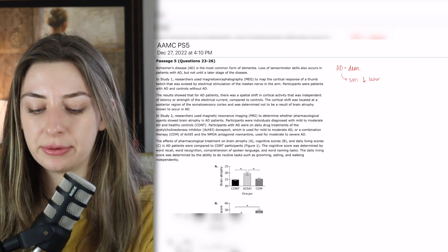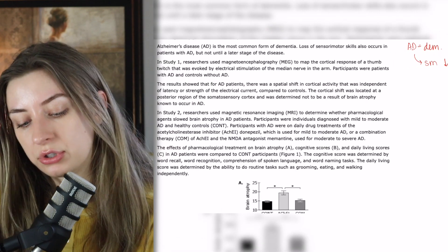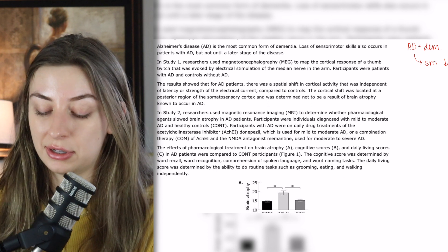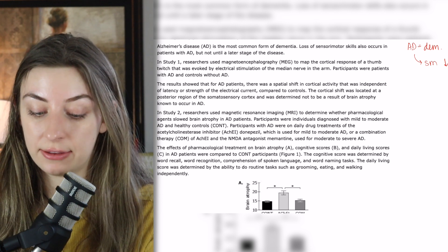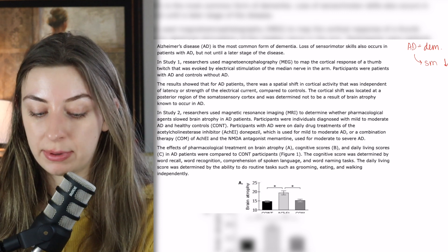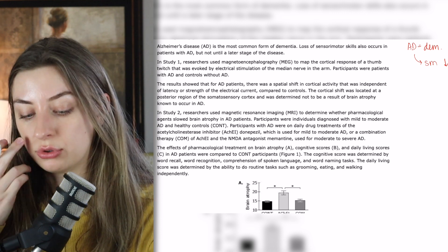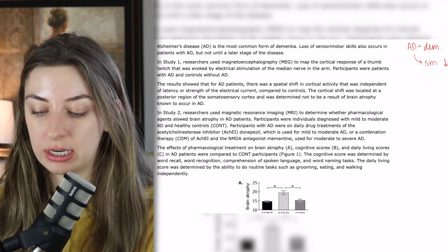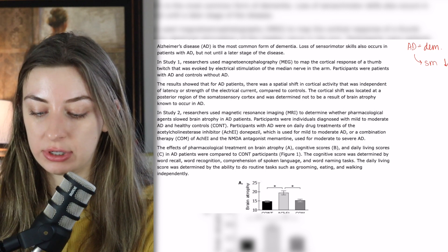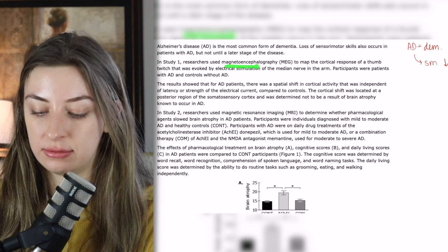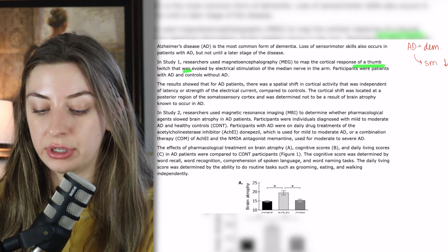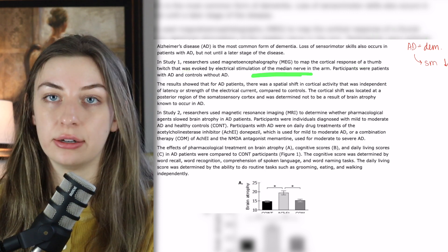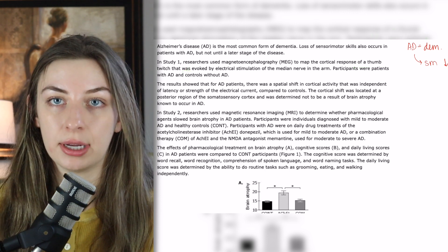In study one, researchers used magnetoencephalography to map the cortical response of a thumb twitch that was evoked by electrical stimulation of the median nerve in the arm. Participants were patients with Alzheimer's and controls without Alzheimer's. This is immediately getting into the research methods — they're going to use MEG to look at how your thumb twitches when you electrically stimulate the median nerve.